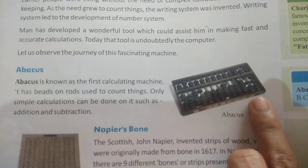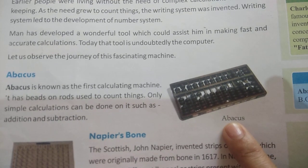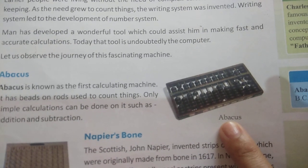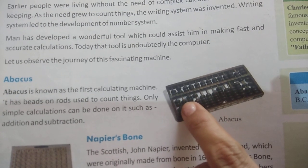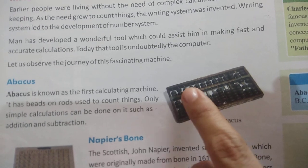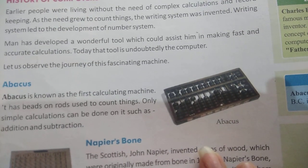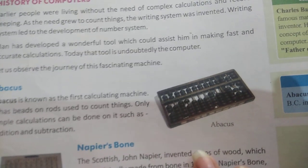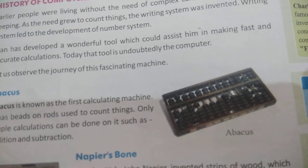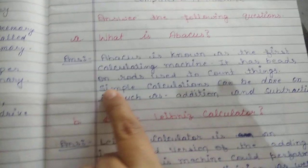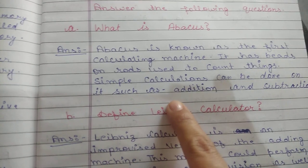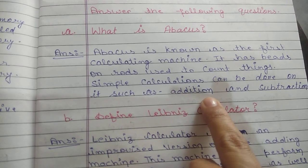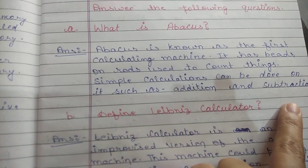Here is the Abacus diagram. It looks like that. These are black beads on rods. With the help of this we can calculate. Simple calculations can be done on it, such as addition and subtraction.